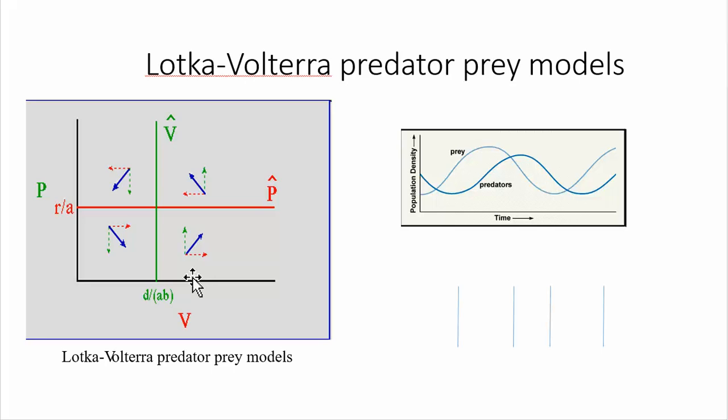Similarly, below the red line, below that threshold density of predators, then the victims are operating in a world that's relatively predator-free and their populations would increase, signified by the arrows moving from left to right. And above that, their densities would be decreasing, signified by the arrows that are moving from right to left.